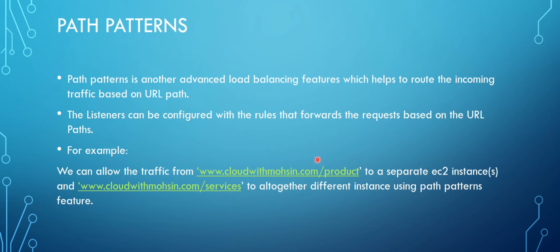If I want my products page to be served by a separate EC2 instance and services to go to another set of EC2 instances, we can do that based on the URL. Each is a separate URL, and if we want traffic distributed based on URL paths, we can enable and leverage path patterns.